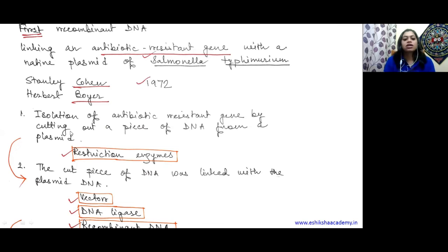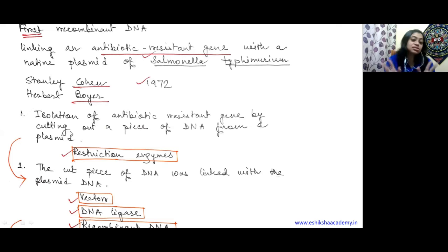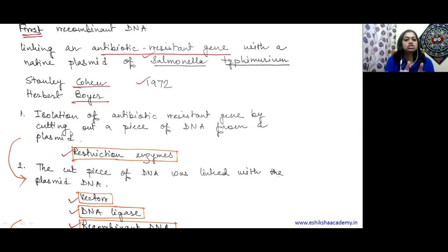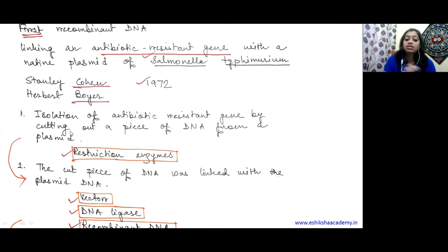Cohen and Boyer used restriction enzymes to find the portion of the antibiotic-resistant gene and cleave both strands of the DNA. Both strands are cut, the plasmid is cleaved, and our gene of interest remains in the solution. Now we have to purify or extract our gene of interest from that particular solution. That is the first step.